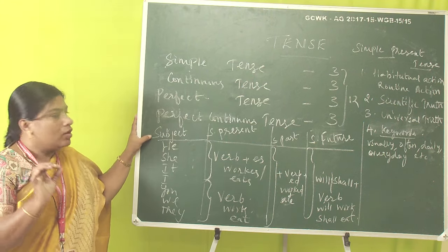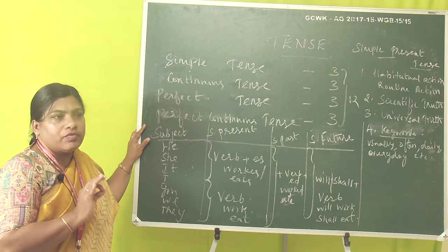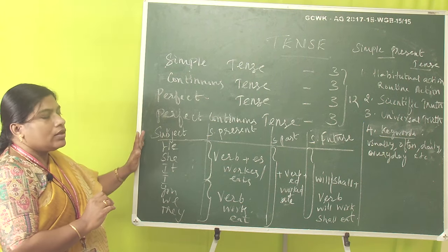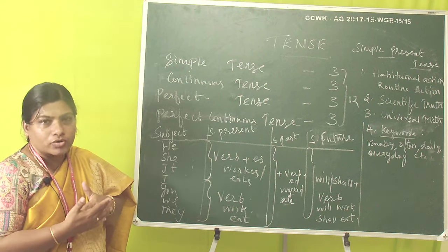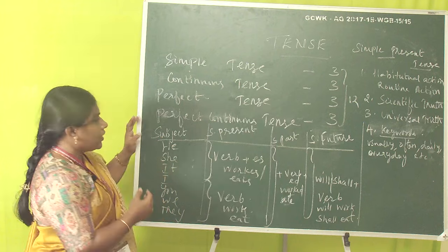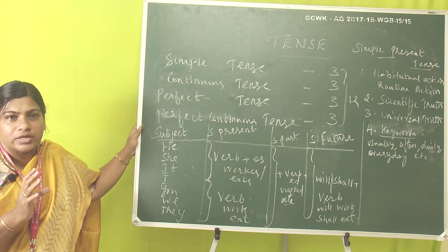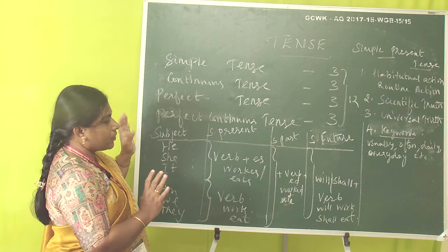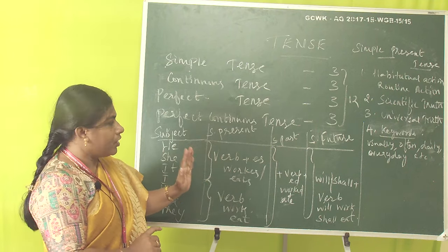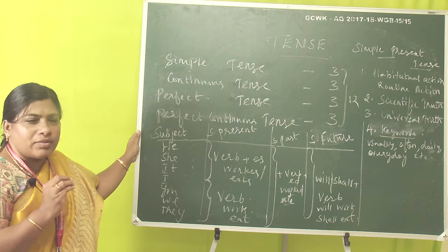Now I have given a tabular column. In each sentence, we go with the subject — he, she, it, I, you, we, they. These are the subject forms. I have given simple present tense, simple past tense, and simple future tense. In simple present tense, we have certain rules to follow. After the subject, we add 's' to the verb, particularly for he, she, it — the third person singular.